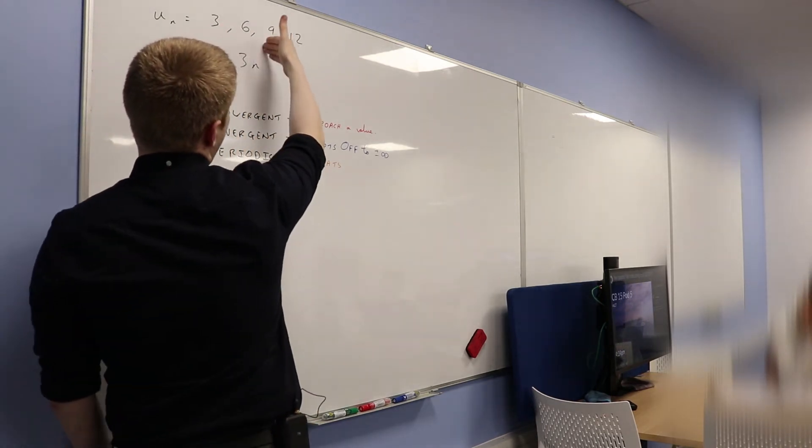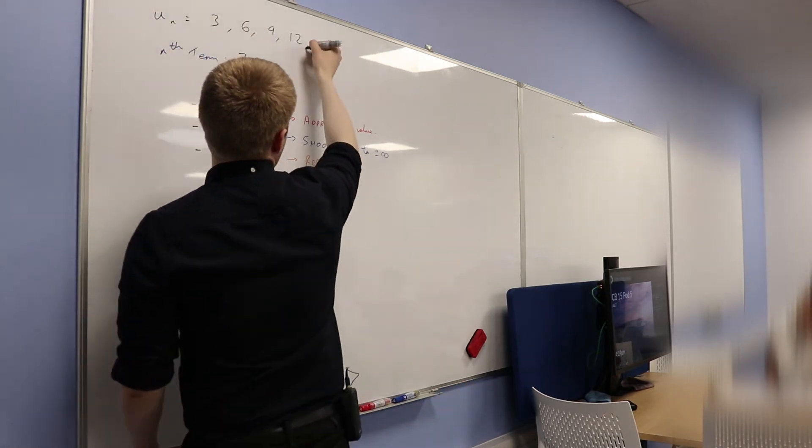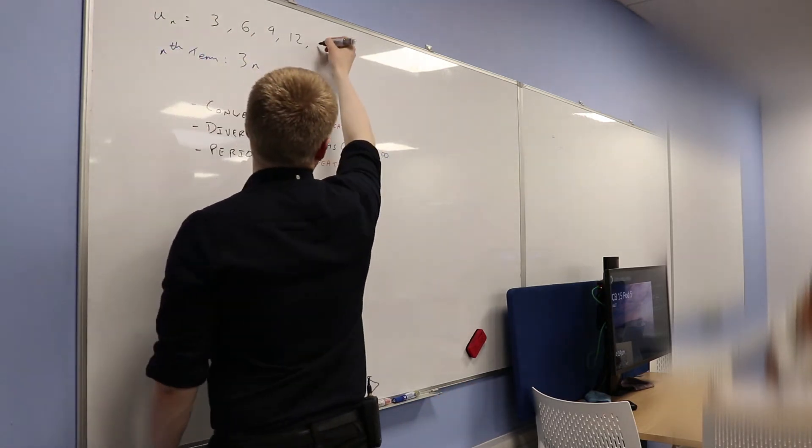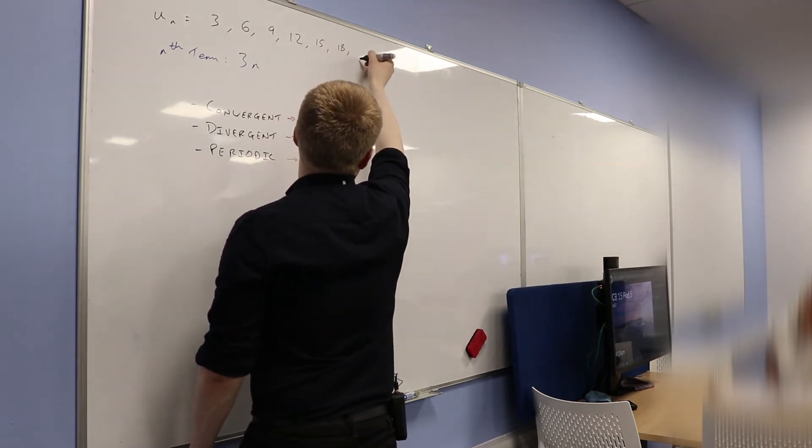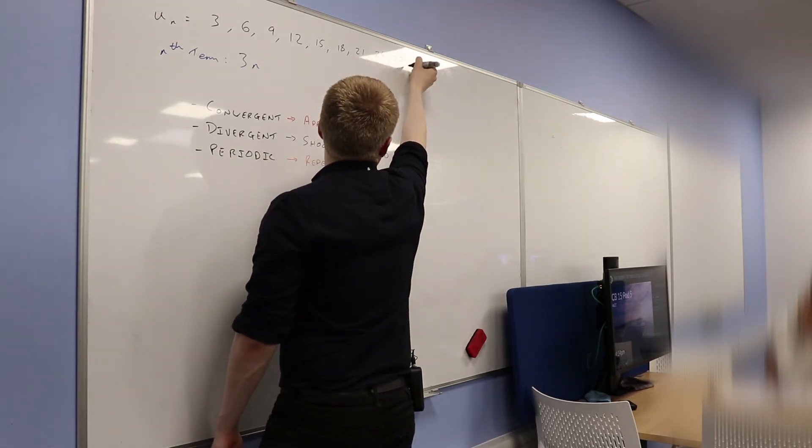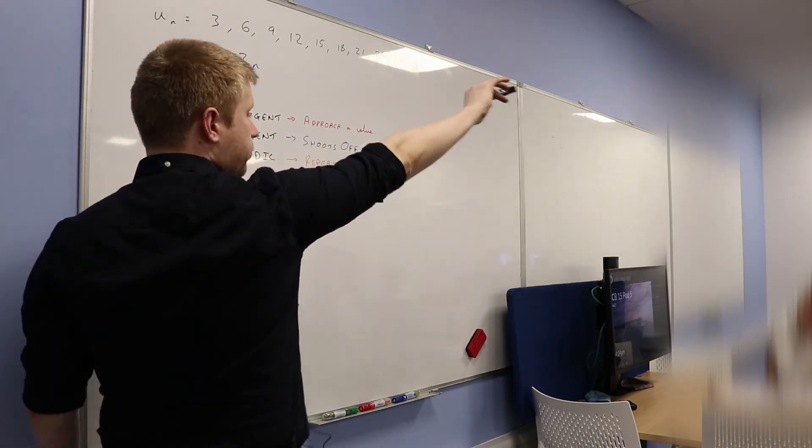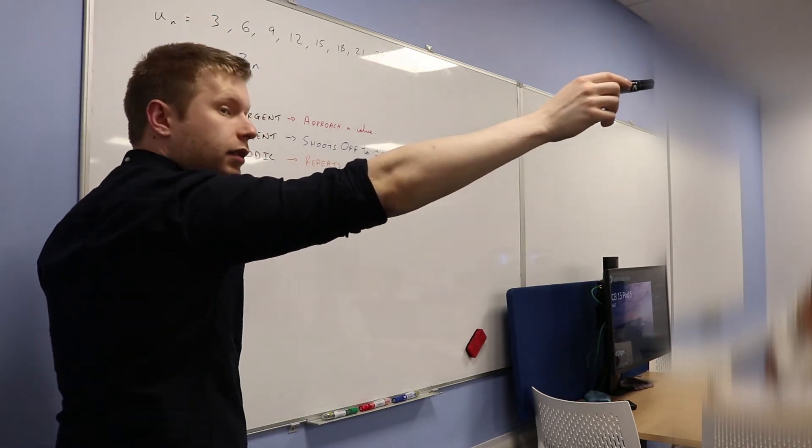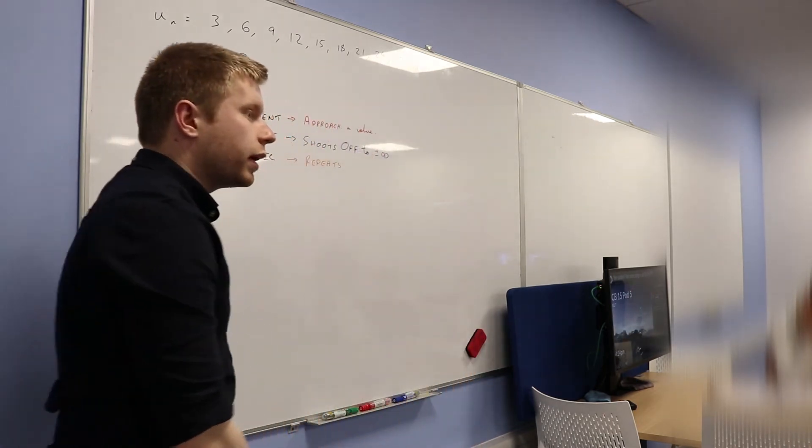In fact, we've got the one, two, three, four, first four terms here. Let's keep going. So what would the next term be? 15. And what would the next term be? What would the next term be? And so on. So that would be 24, 27. Are you happy that what's happening here is that it shoots off to plus infinity in this case? Because this thing is getting really, really big. It's getting really, really big.